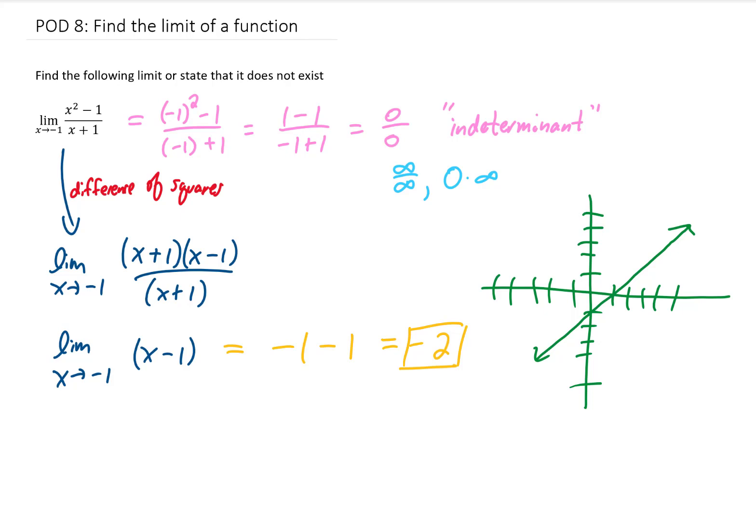The only difference between the original function and the function that I just graphed is that the original function doesn't exist at x equals negative 1 because there's a denominator that becomes 0 at that value. So right here, just at this value x equals negative 1, we have a hole or what we call a removable discontinuity, meaning that this original function does not exist at x equals negative 1.